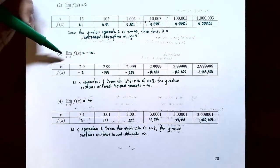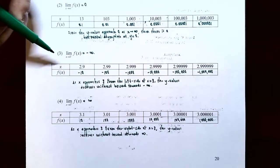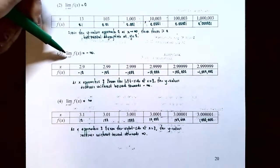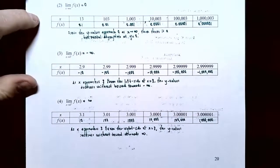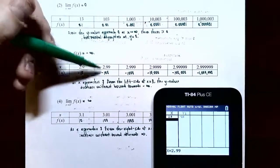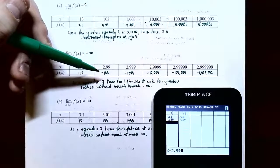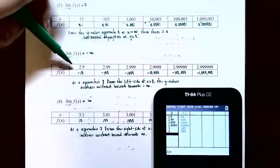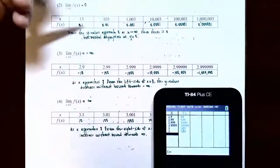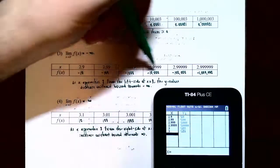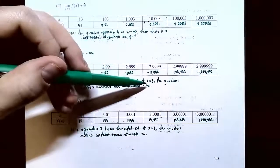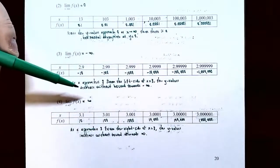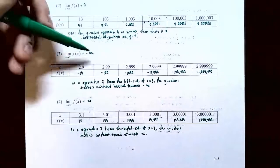For the limit as x approaches three from the left side: plugging in 2.9 gives −10, 2.99 gives −100, 2.999 gives −1000, and so on. As x gets closer and closer to three from the left — x values less than three — the y values are decreasing without bound, tending toward negative infinity. So the limit as x approaches three from the left is negative infinity.